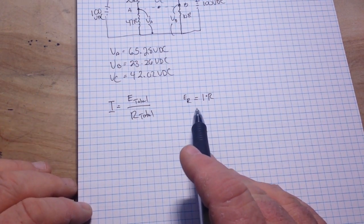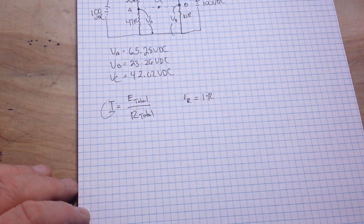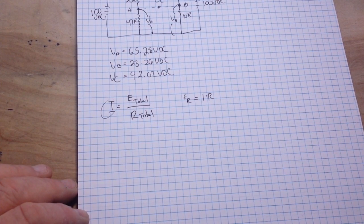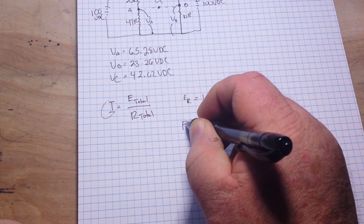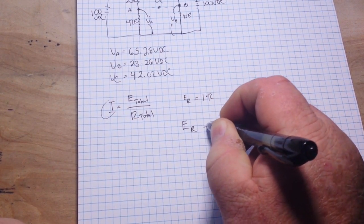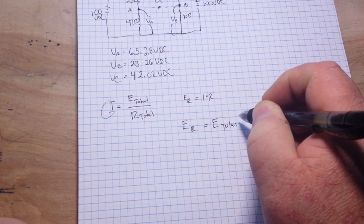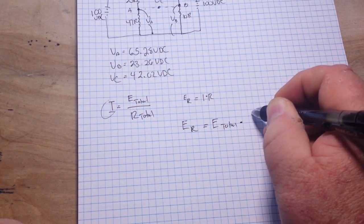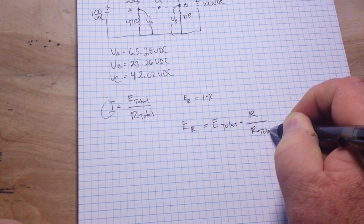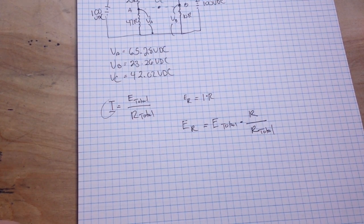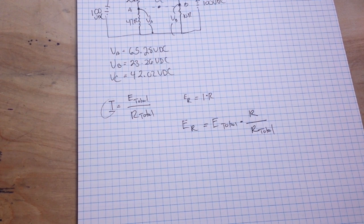Now, I want you to combine these two formulae to eliminate the I. Go. Are you ready? Here we go. It is ER equals E total times R over R total. That's just a simple algebraic manipulation of the two formulas. Nothing too hard there.